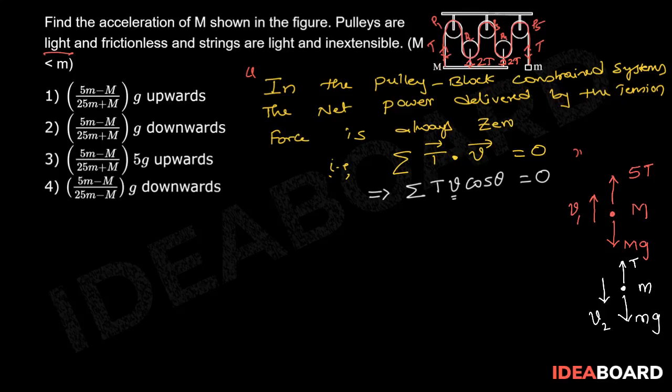Then from this statement, sigma TV cos theta equals zero, we can write 5T into V1 minus T into V2 is equal to zero. Then this can be written as 5 times V1 equals V2.